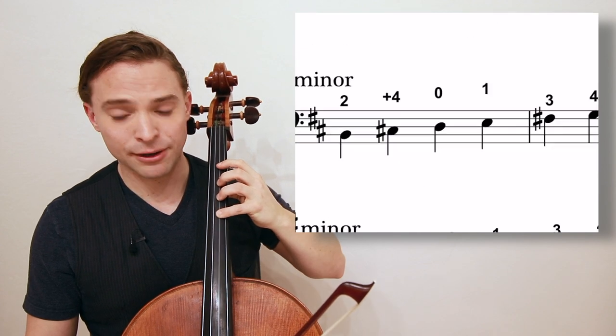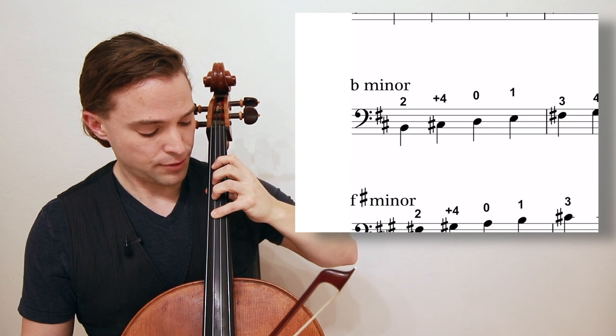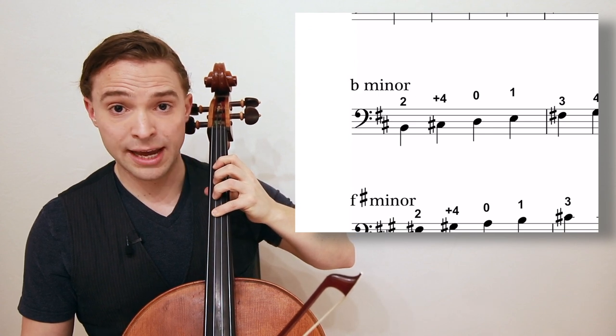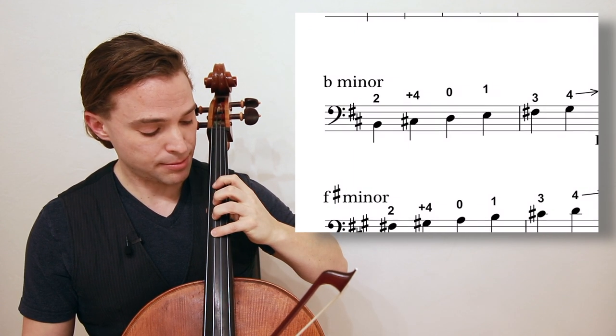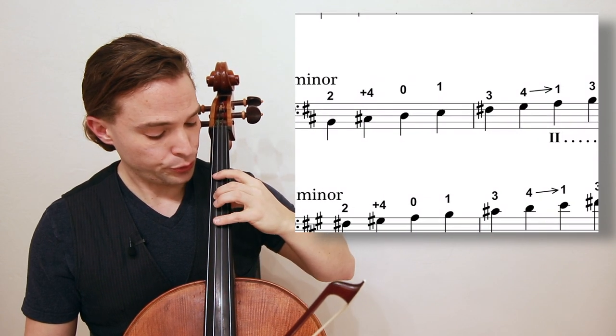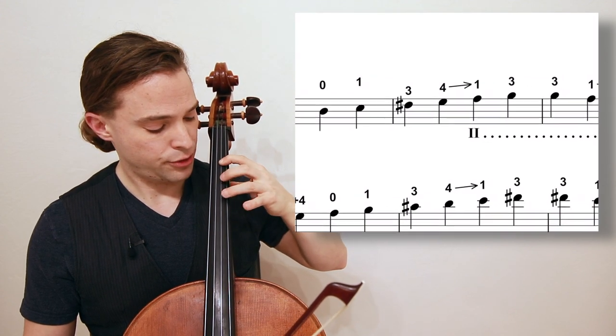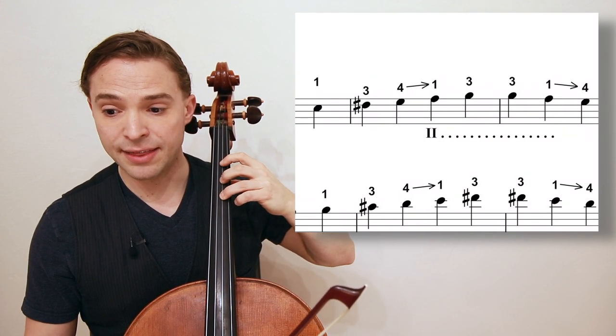So in B minor, you have your hand here in first position on the D string. Follow along. Control the hand by controlling the thumb. Shift the thumb up one half step, maintaining its shape. It starts with two, plus four, zero, one. You can relax your hand. Three, and then four.